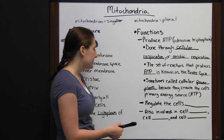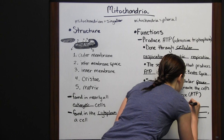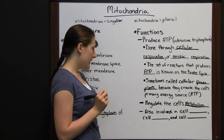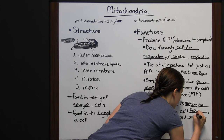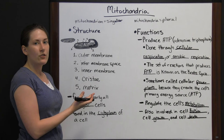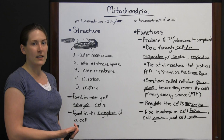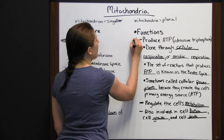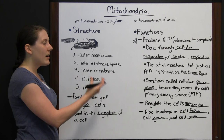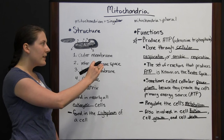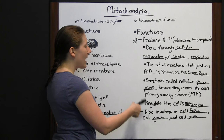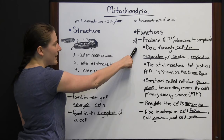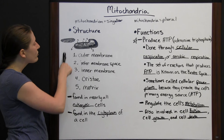Mitochondria also regulate the cell's metabolism, and are involved in cell division, cell growth, and cell death. All these processes require energy, and since the mitochondria produce the primary energy source, it makes sense they're involved in many processes. The most important function is producing ATP — that is the primary source of energy for the cell.